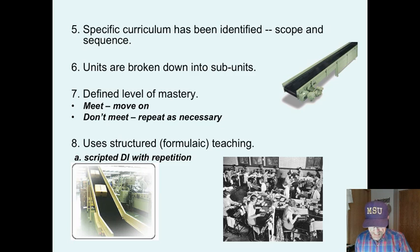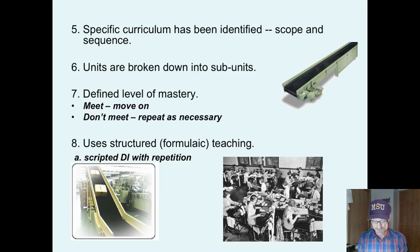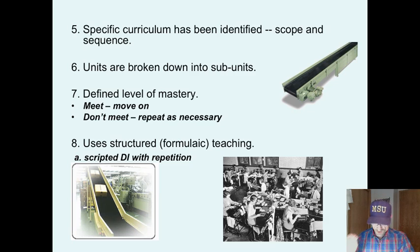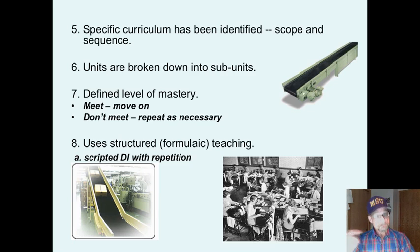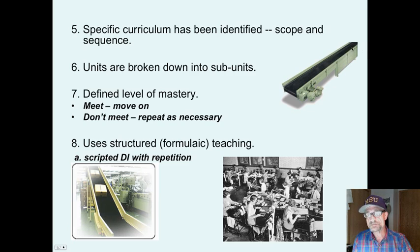Units are broken down into sub-skills. You define a larger unit or something to be taught, and then you break it down into smaller units and levels of skills. It has a defined level of mastery, meaning that students meet a criteria and move on. Or if they don't, they repeat as necessary. If they meet the criteria, they move along the conveyor belt.